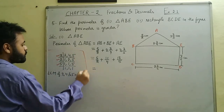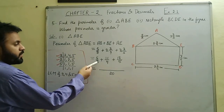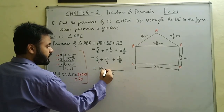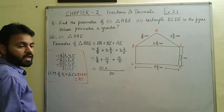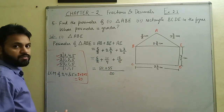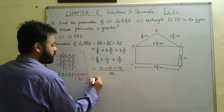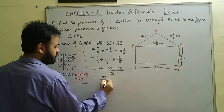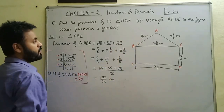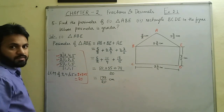Taking LCM as 20: 20 ÷ 2 = 10, and 10 × 5 = 50. Plus 20 ÷ 4 = 5, and 5 × 11 = 55. And 20 ÷ 5 = 4, and 4 × 18 = 72. Adding 50 + 55 + 72 = 177. So the perimeter of triangle ABE is 177/20 cm.